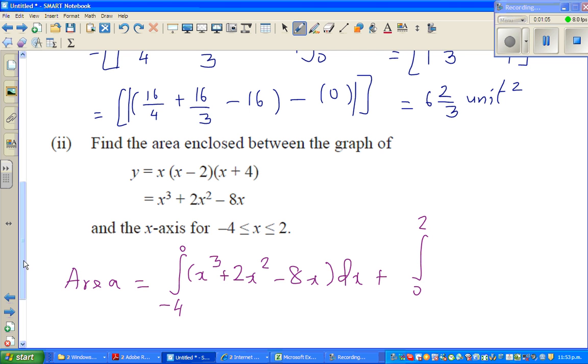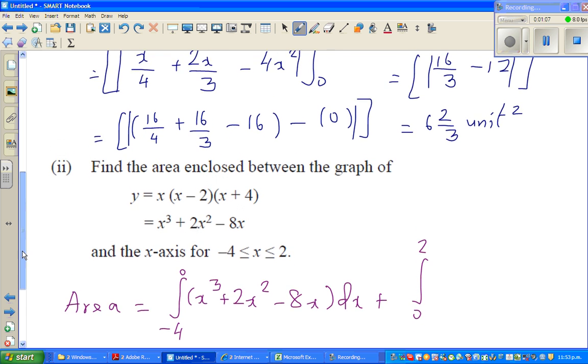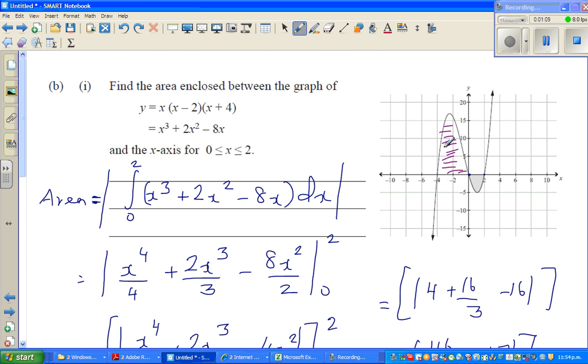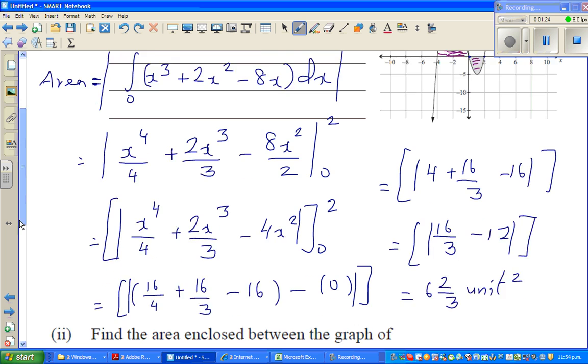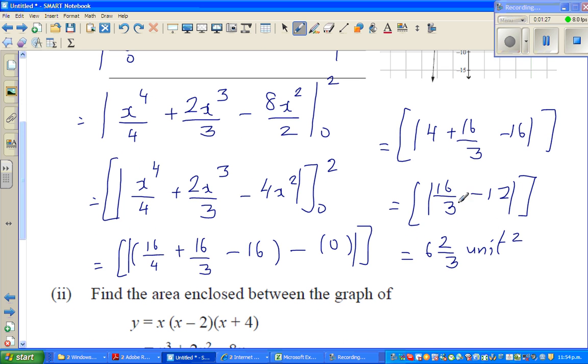Now the reason why we have to do in two steps is this area is positive. This area mathematically is positive because it's above the curve, above the x-axis. And this is under the curve, so it will be negative, that's why we have to use the modulus. You can see here the ultimate answer that you got was negative, but because you had the modulus, modulus is a mathematical tool to change a negative quantity to a positive quantity.